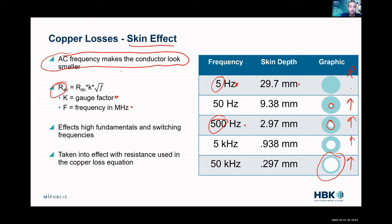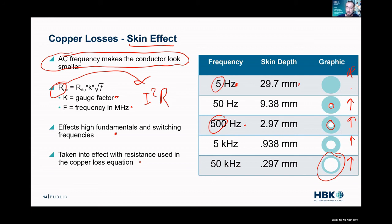You're just plugging this into your I-squared-R equation, and it's that simple — we have our phase current, we have our resistance, we can calculate what our power losses are. Skin effect affects really high fundamentals and switching frequencies, and we just plug this AC resistance into our resistance equation that we're compensating with temperature. So we're making the equation more complex, but it's still I-squared-R.